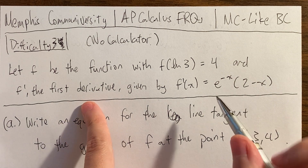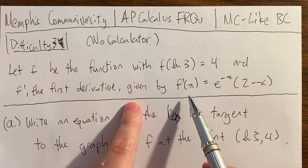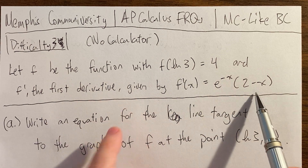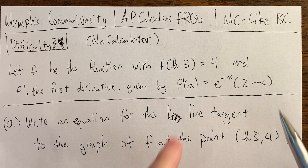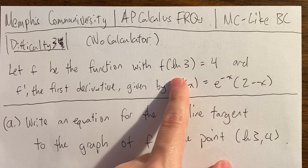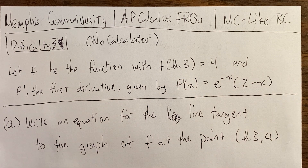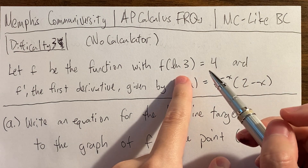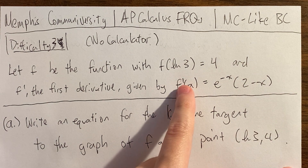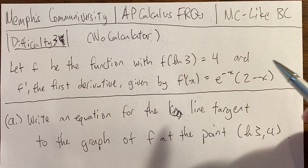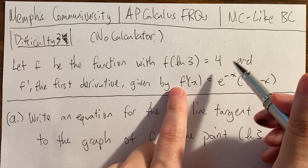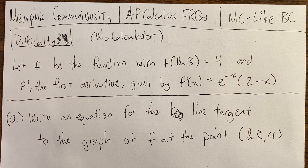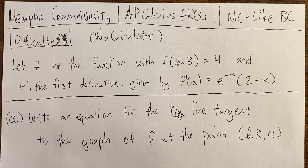The givens: let f be a function with derivative f'(x) = e^(−x)(2 − x), and an initial point where the x-coordinate is ln(3). They give us the initial point because we'll eventually do the fundamental theorem of calculus — the usual setup is a derivative and an f value, just like particle motion FRQs where velocity is given with an initial condition.